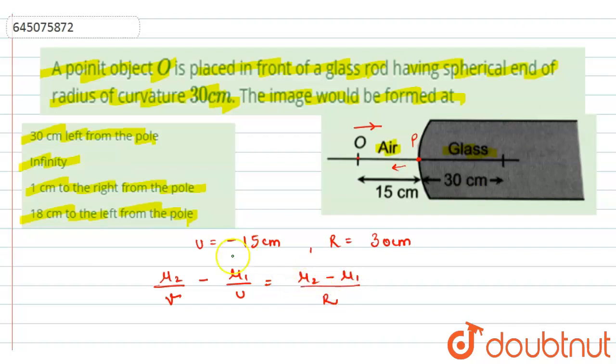So here we have mu 2 and mu 1. Mu 1 represents the medium for air and mu 2 represents the refractive index for glass. The value of mu 1 will be equals to 1 for air and for glass the refractive index is 1.5.